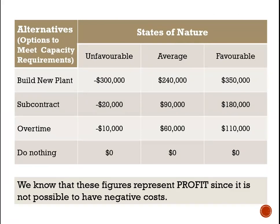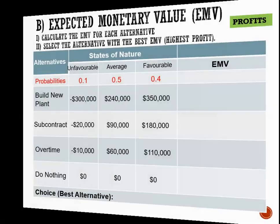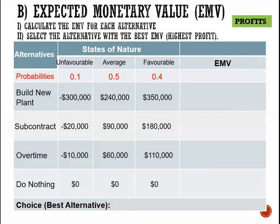Let's move on to our next payoff table, where we are looking to choose an option to meet our capacity requirements. The choices are to build a new plant, to subcontract, to do overtime, or simply do nothing. The figures in the table represent profits. We incorporate our probabilities just as before: 10% for unfavorable, 50% for average, and 40% for favorable.